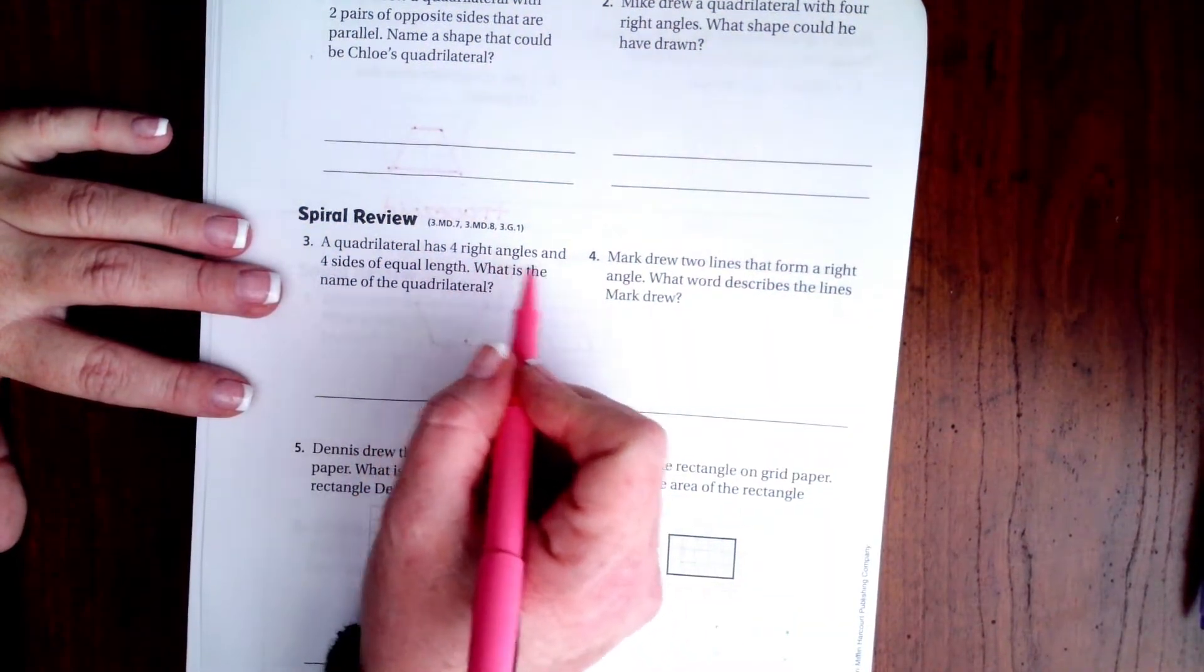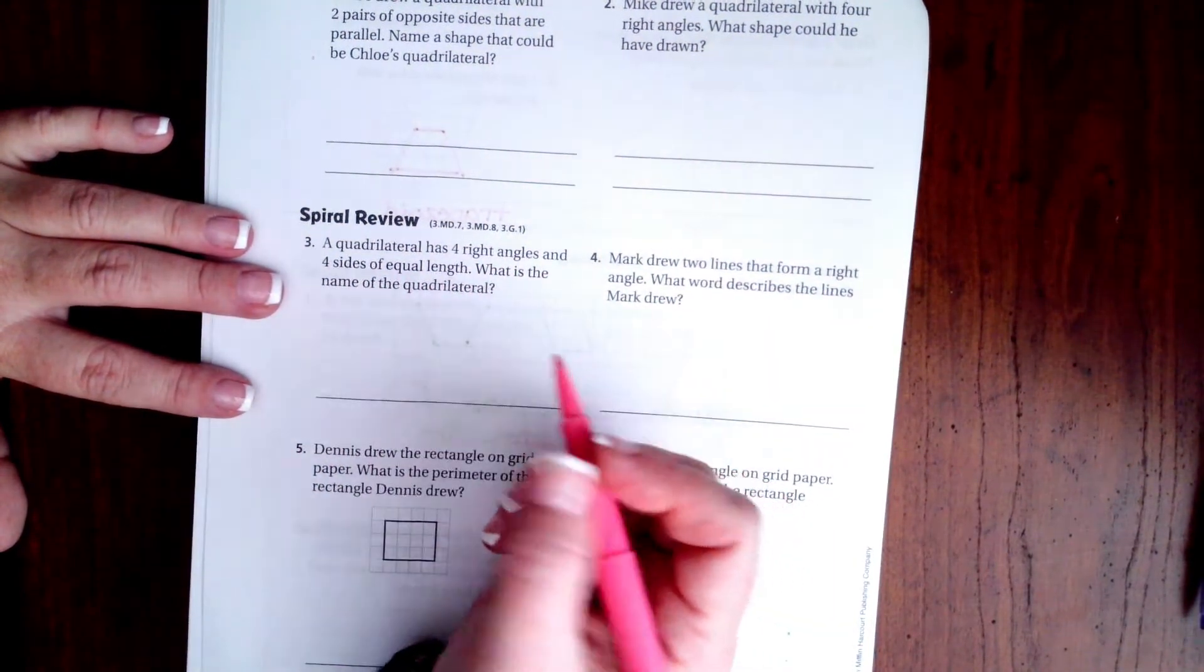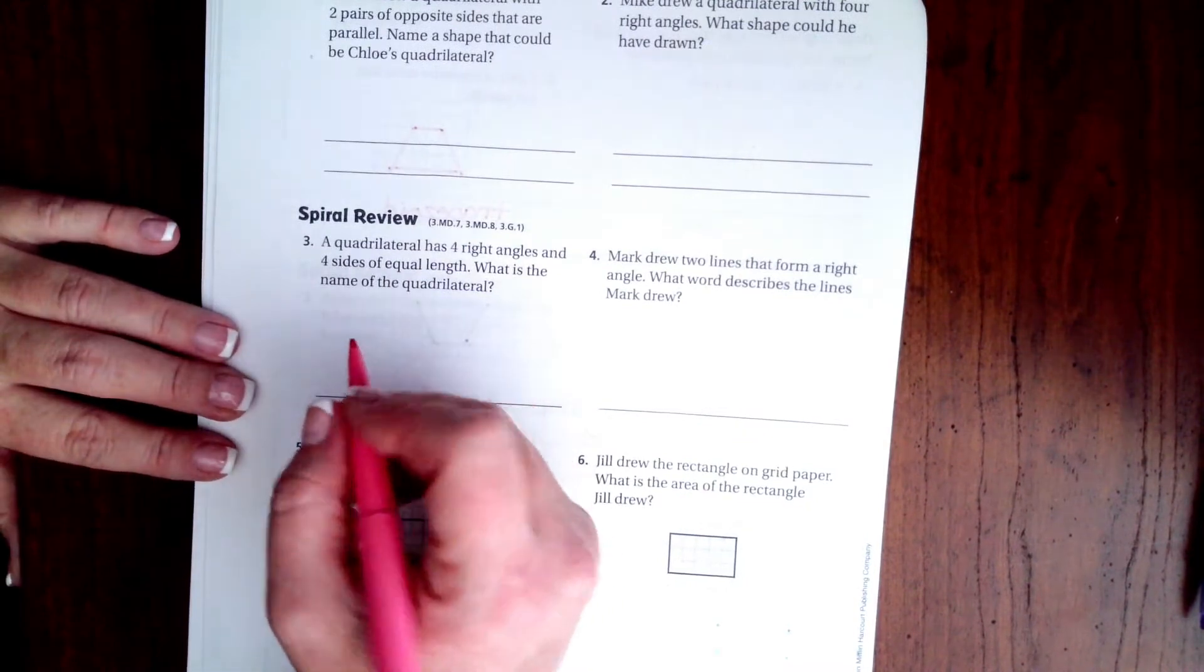It says a quadrilateral that has 4 right angles and 4 sides of equal length. What is the name of the quadrilateral? Well that's just a square guys.